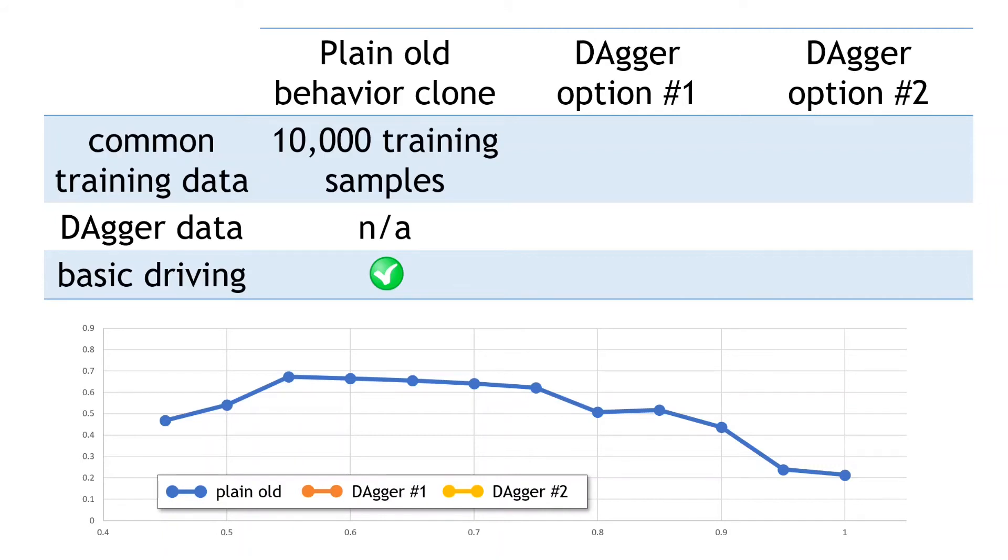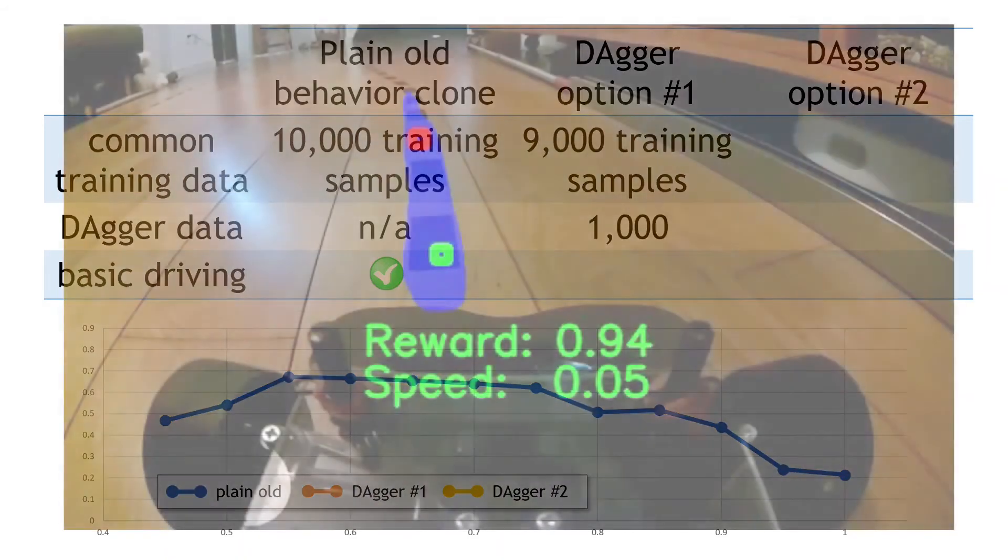To train the policy, I used 9,000 examples from the common training data and augmented this with an additional 1,000 examples using the Dagger collection method. So how did this policy go?